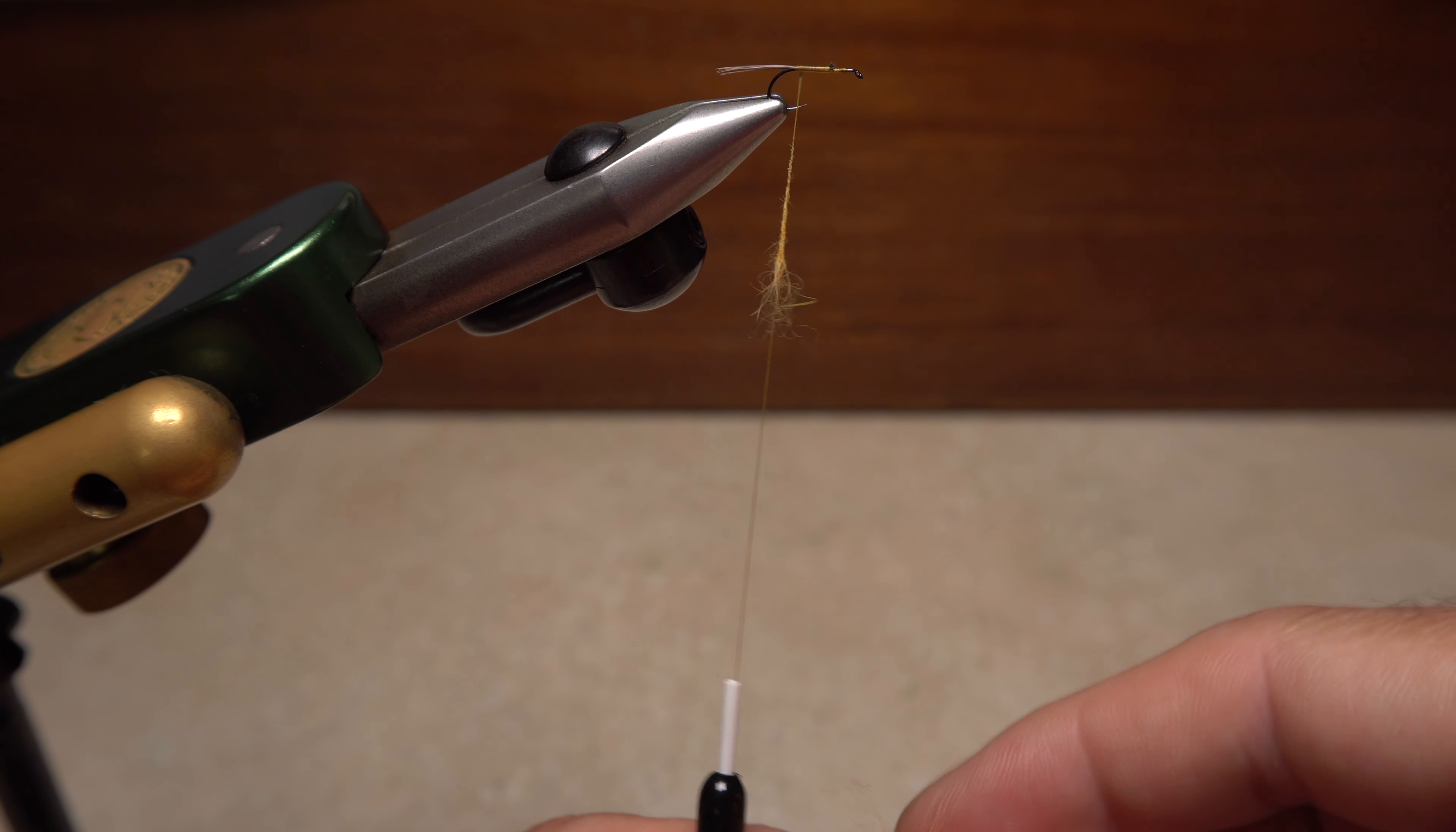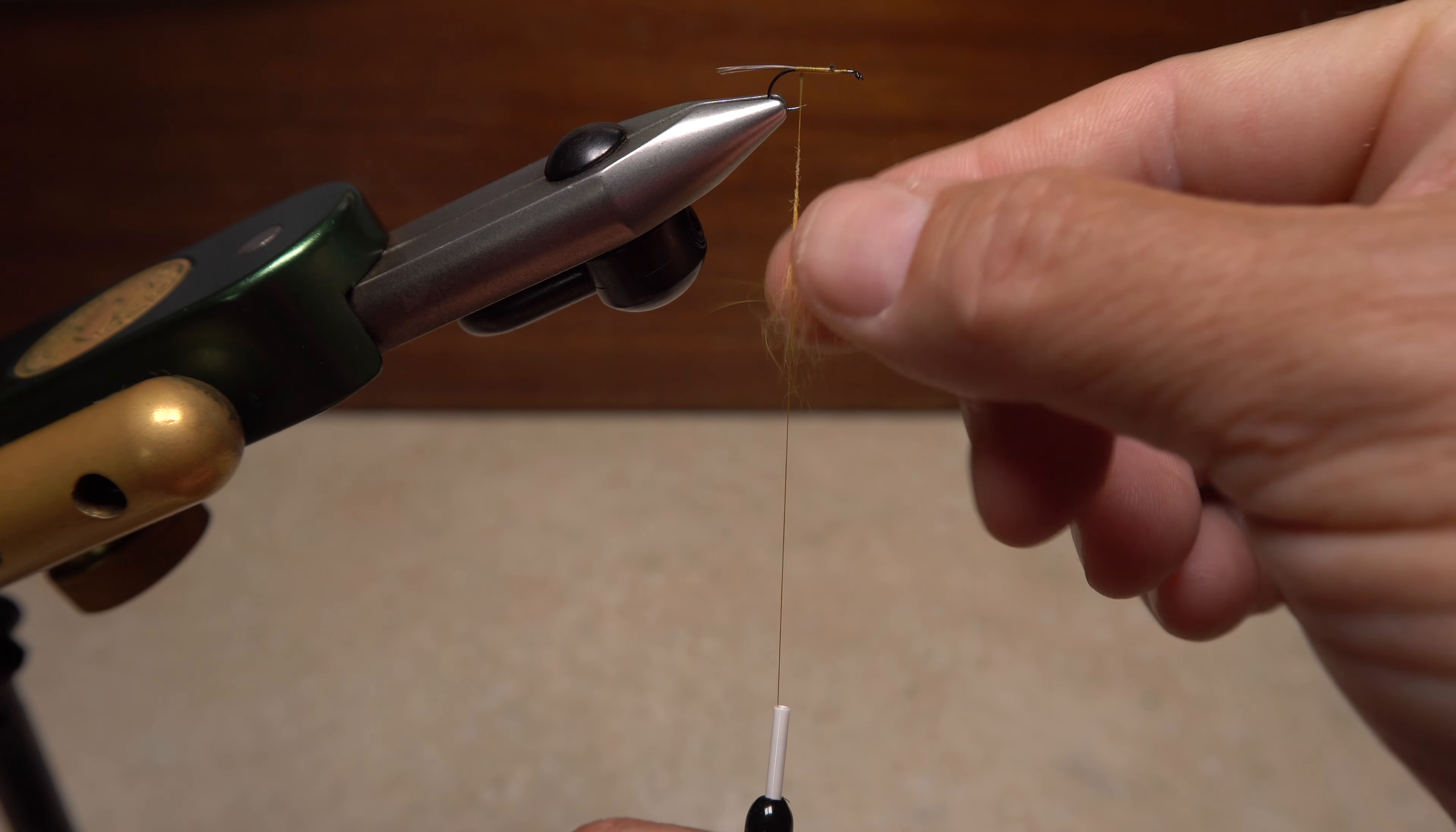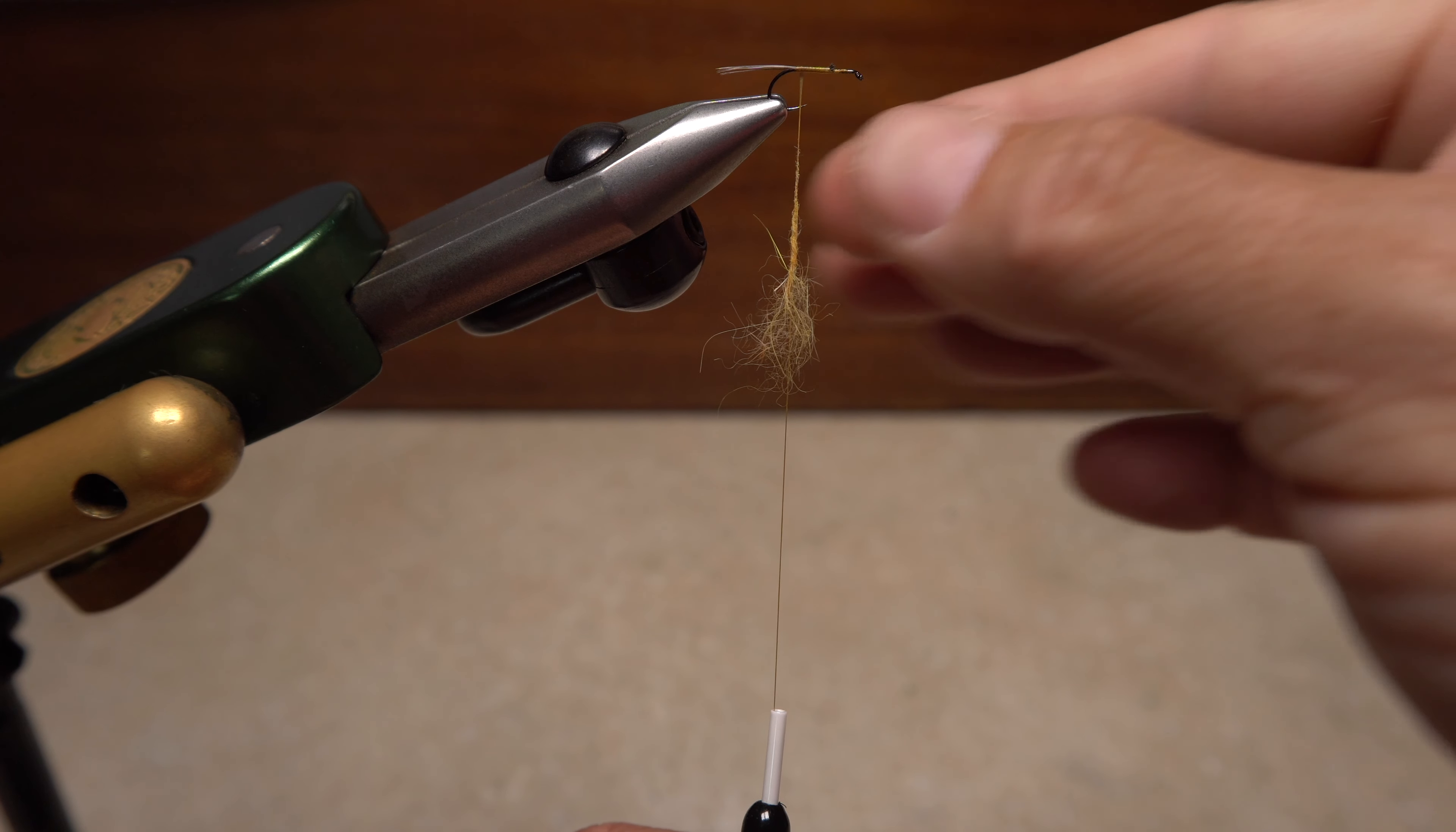Leave the bottom part of the dubbing untwisted, then repeat the process of elongating the fibers, but this time, as you twist them onto your tying thread, they'll weave in with the untwisted fibers already there, creating a much more cohesive dubbing noodle.